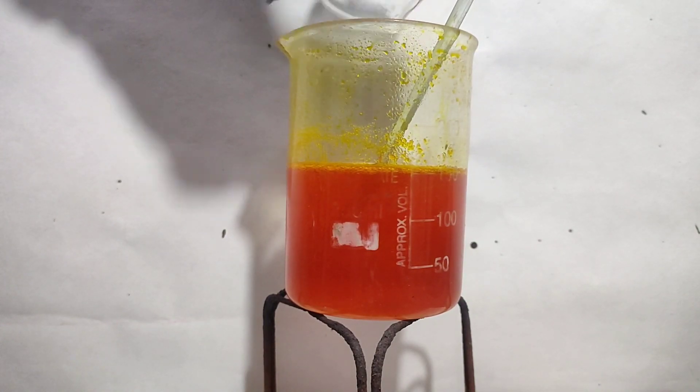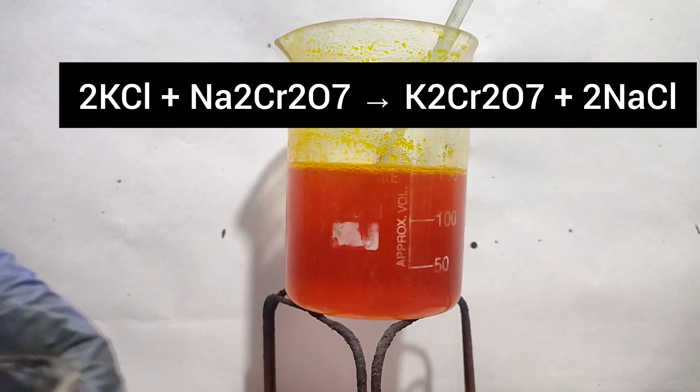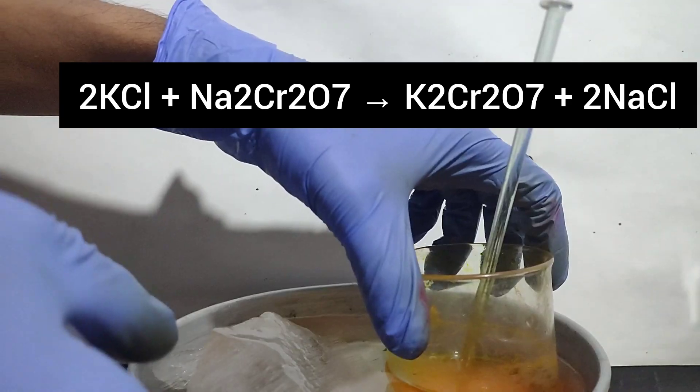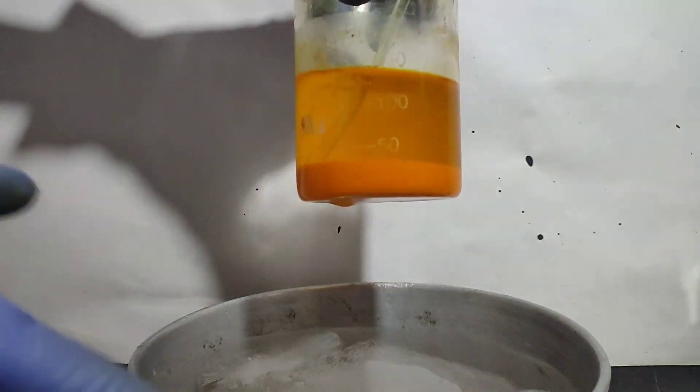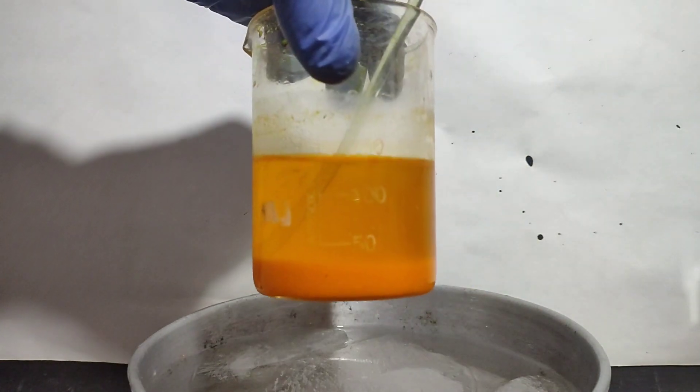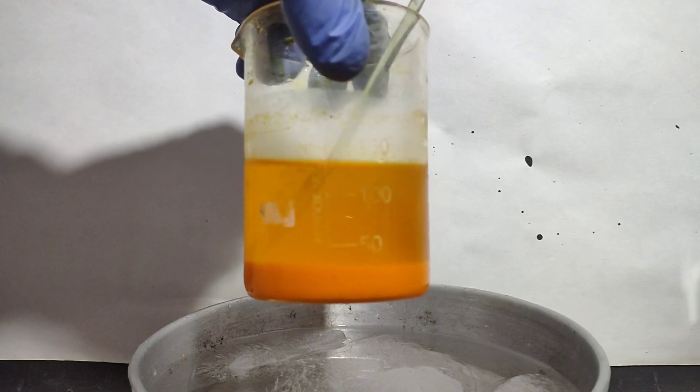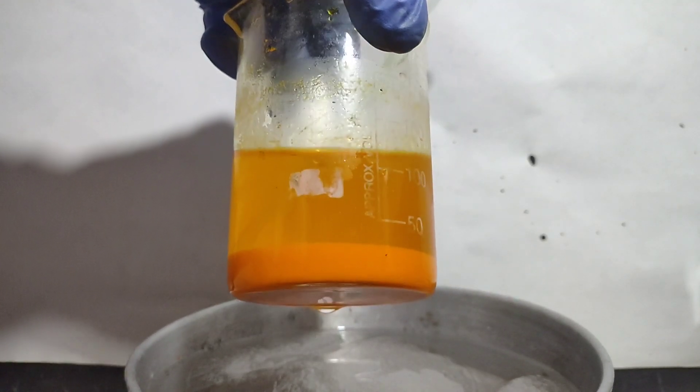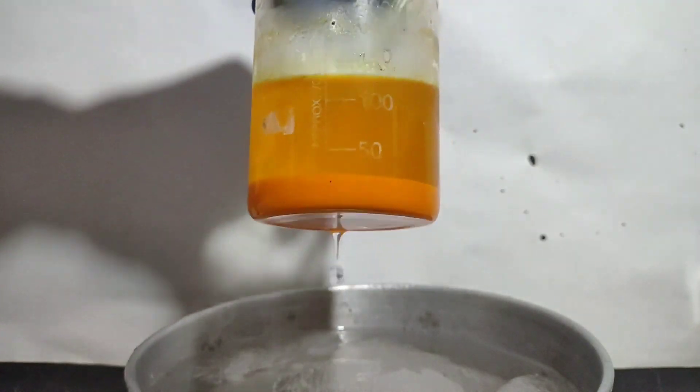Initially nothing happened as solution was very hot. But on keeping the beaker in ice bath for some time, orange crystals of potassium dichromate were formed, as potassium dichromate has very low solubility in ice cold water, that is 5g per 100 ml at 0 degree Celsius.